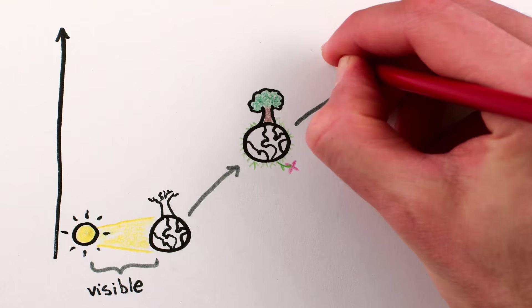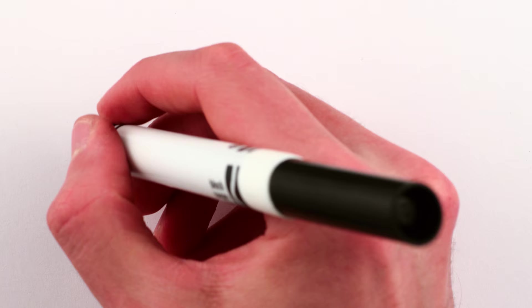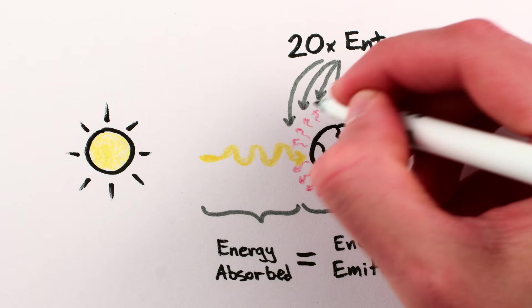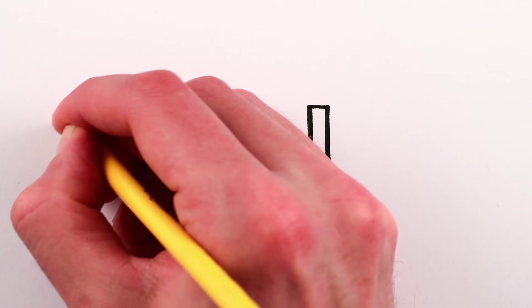until we radiate it away in a much higher entropy form, lots of infrared photons. For every visible photon we receive, the Earth radiates about 20 infrared photons out into space. Even though there's a balance of energy in with energy out, the entropy of the energy has gone up 20 times.